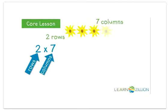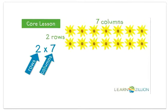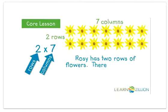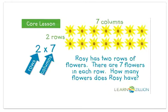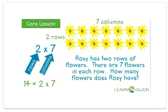Here's one row of seven flowers and a second row of seven flowers. To write a story to match this array, we could think about having two rows of flowers. Rosie has two rows of flowers. There are seven flowers in each row. How many flowers does Rosie have? Rosie has fourteen flowers. Two times seven is the same as fourteen.